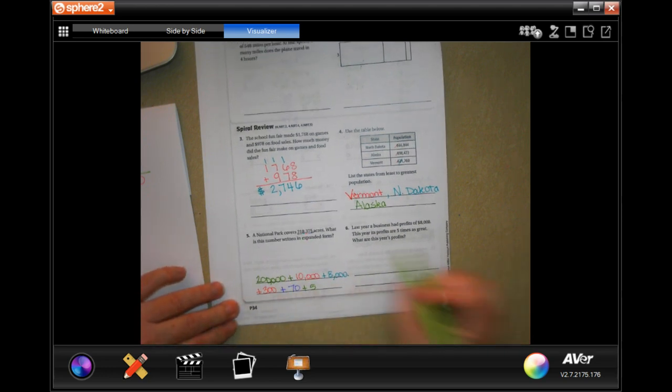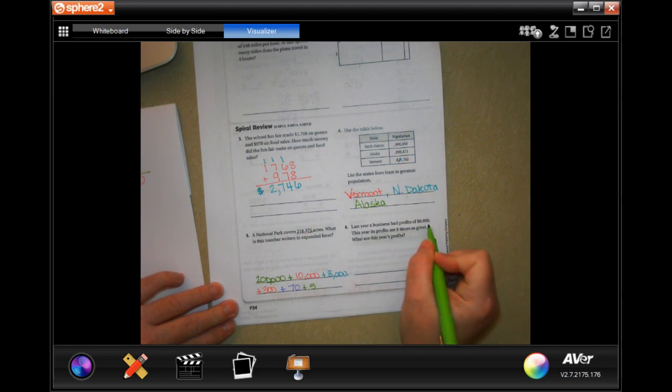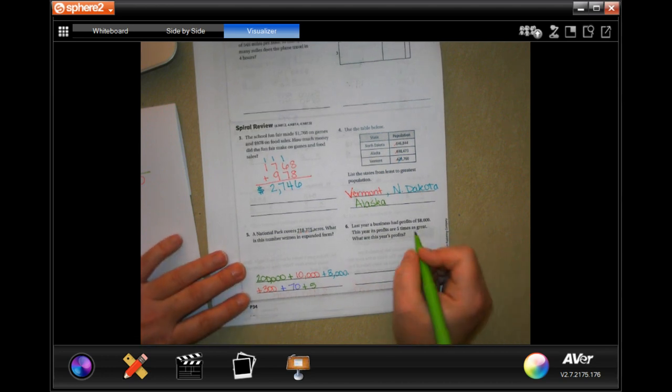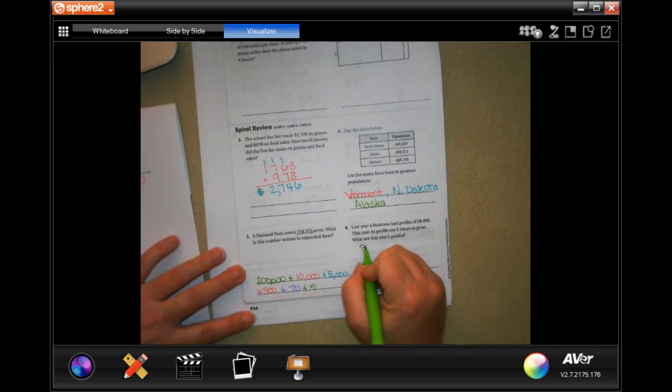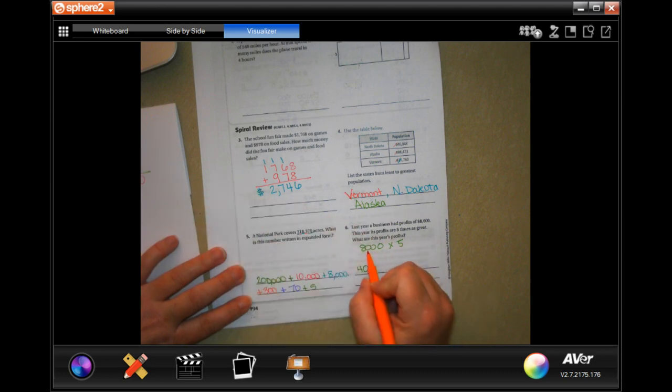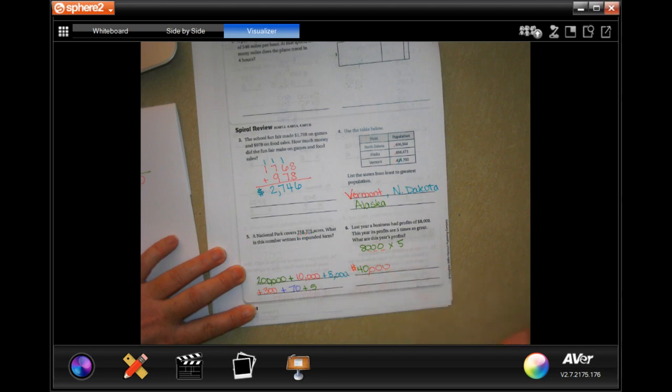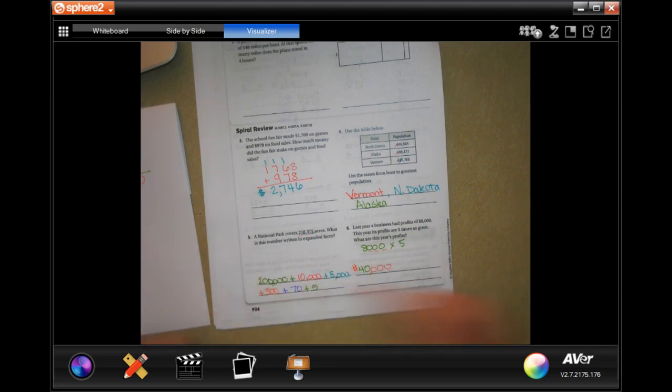All right. Last year, a business had profits of $8,000. This year, its profits are five times as great. What is this year's profit? So it's 8,000 times 5. Well, 5 times 8 is 40. Then I have 1, 2, 3 zeros to write down. So $40,000.